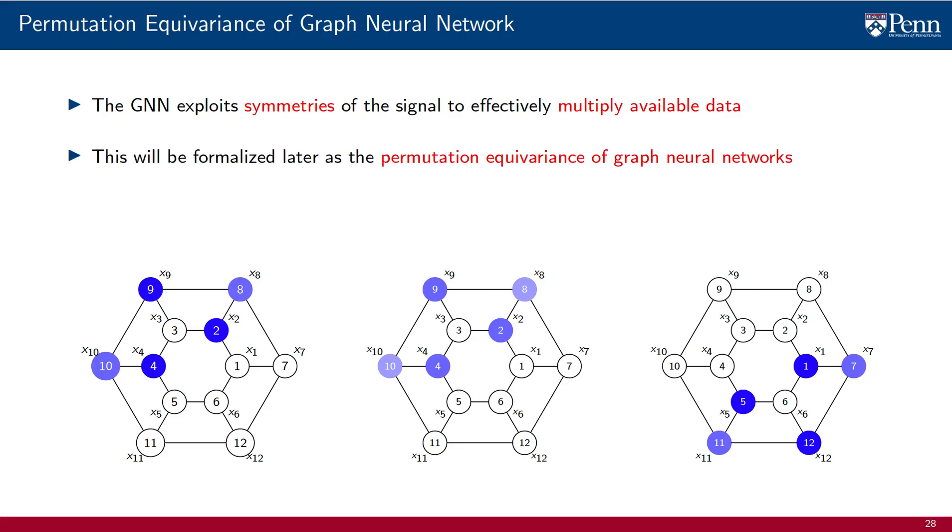This intuitive idea will be formalized later in the form of the permutation equivariance of GNNs. And it will also connect with stability notions, which is what will allow us to exploit quasi-symmetries, as opposed to exploit exact symmetries only.